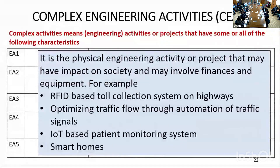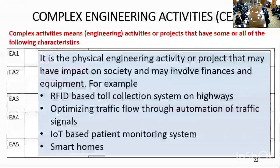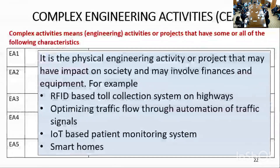Overall, it is a physical engineering activity or project that may have impact on society and may involve finances and equipment. For example, there are complex activities such as an RFID-based toll collection system for a highway, and optimization of traffic flow through automation of traffic signals, where traffic signals can be automated to optimize traffic flow.